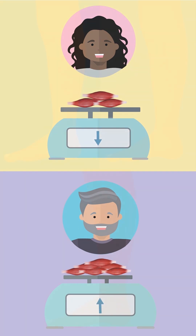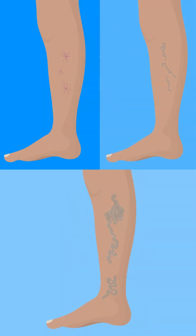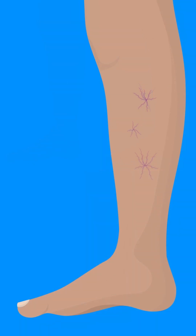There are several different types of varicose veins. The first type are spider veins, which can be seen as very thin purple lines, a little bit like spider's legs, on the skin. This morphology is due to the smallest of the superficial veins being affected.